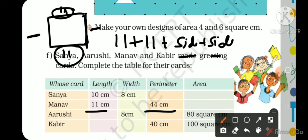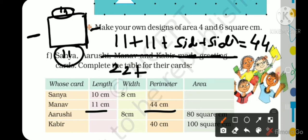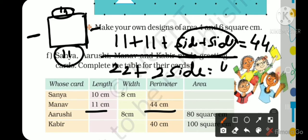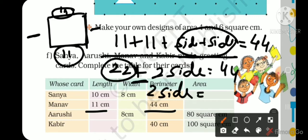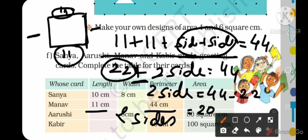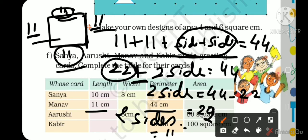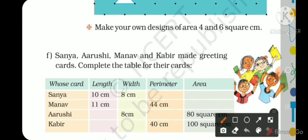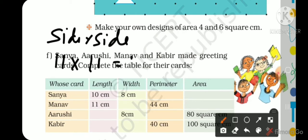Now, the two width sides are unknown. We know the total perimeter is 44 cm. Since 11 + 11 = 22, the two width sides together equal 44 − 22 = 22. So each width = 22 ÷ 2 = 11 cm. This means Manav's greeting card is actually a square with 11 cm sides. Area = 11 × 11 = 121 square cm.